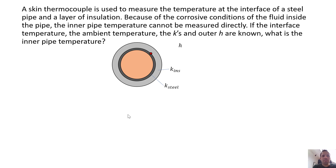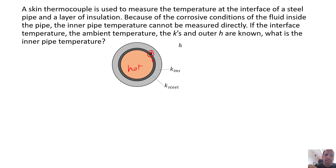Because of the corrosive conditions of the fluid inside the pipe, the inner pipe temperature cannot be measured directly. If the interface temperature, the ambient temperature, the thermal conductivities, and the outer convective coefficient are known, what is the inner pipe temperature? This is a very practical, very real problem. Let's say you could only measure temperature on the outside of a pipe and then had to infer, based on laws of heat transfer, what the temperature is on the inside. This fluid inside is corrosive and we can assume it's hot, so we don't want to put a thermocouple there because it would corrode and wouldn't last very long.